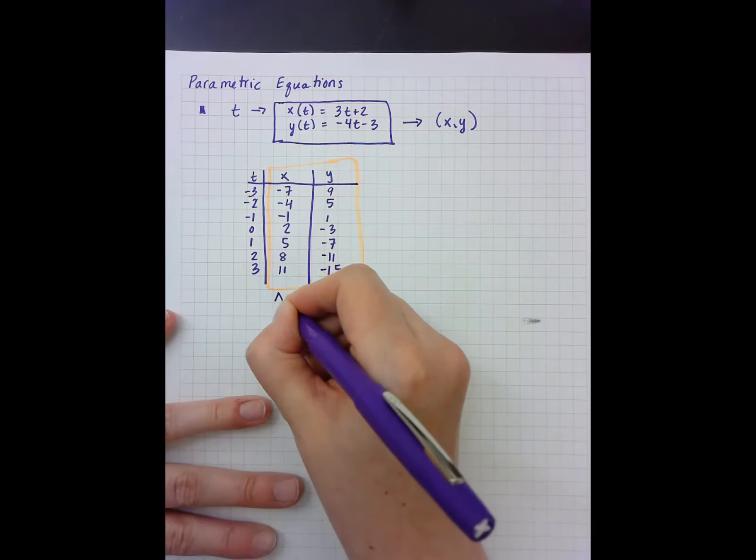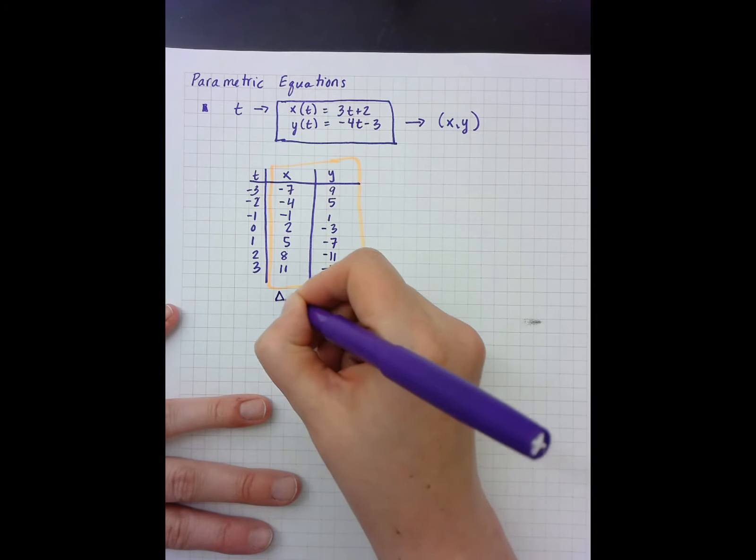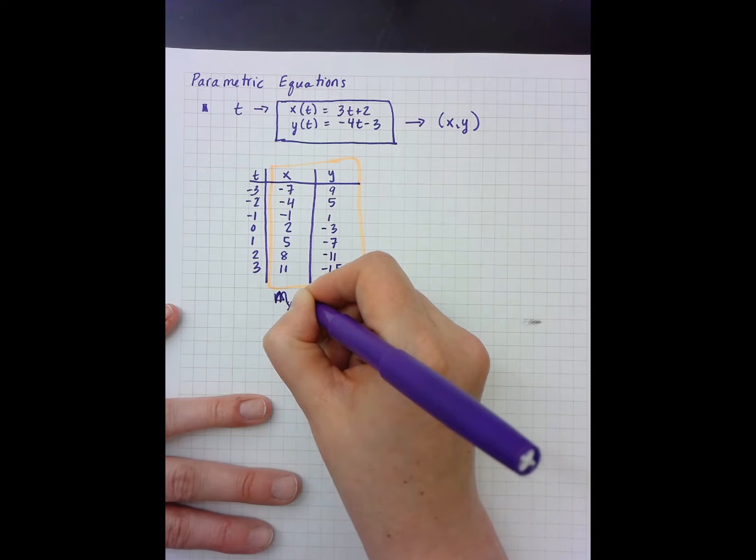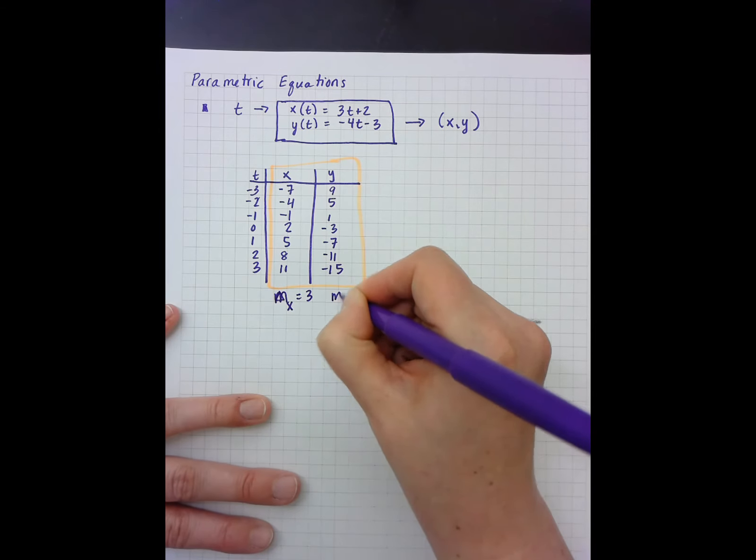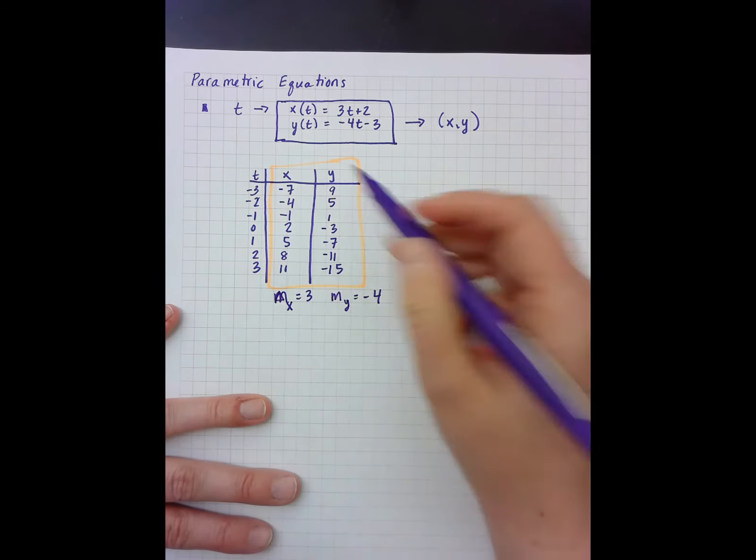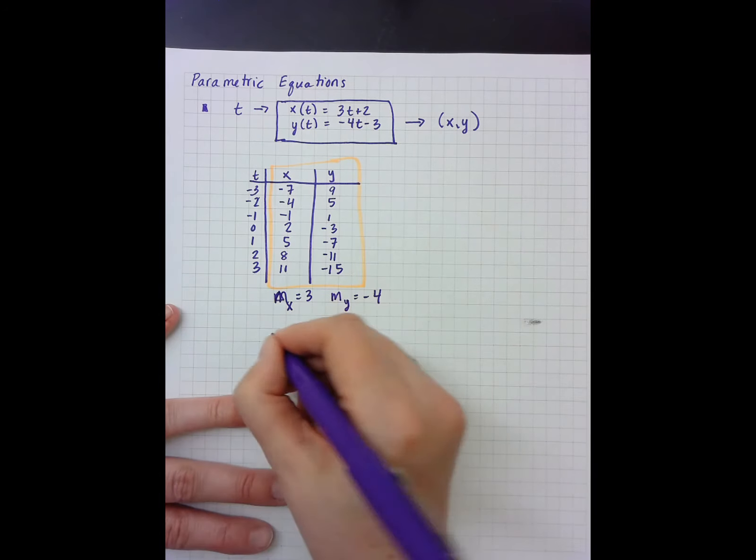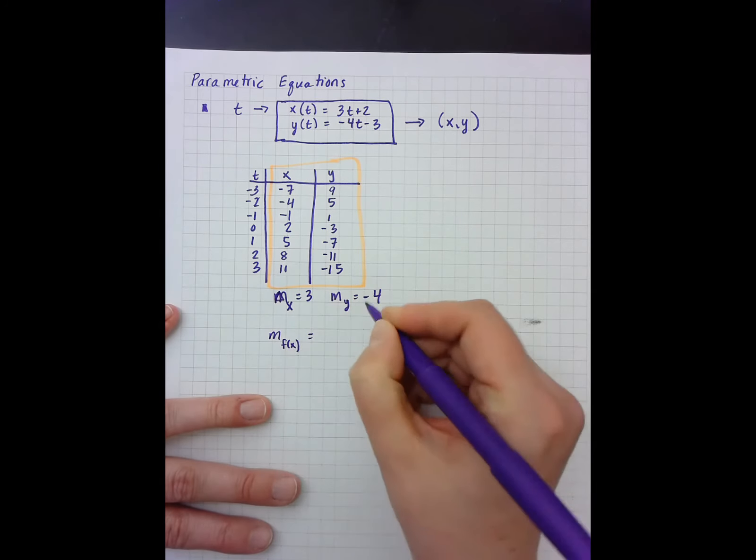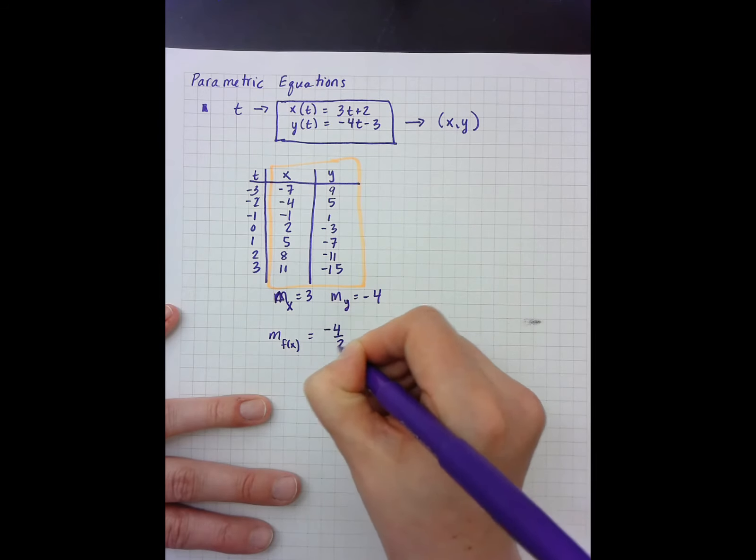My slope here, my change—my m of our x function is 3 and our m of our y function is negative 4. And so it turns out that our slope of our f of x is negative 4 over 3.